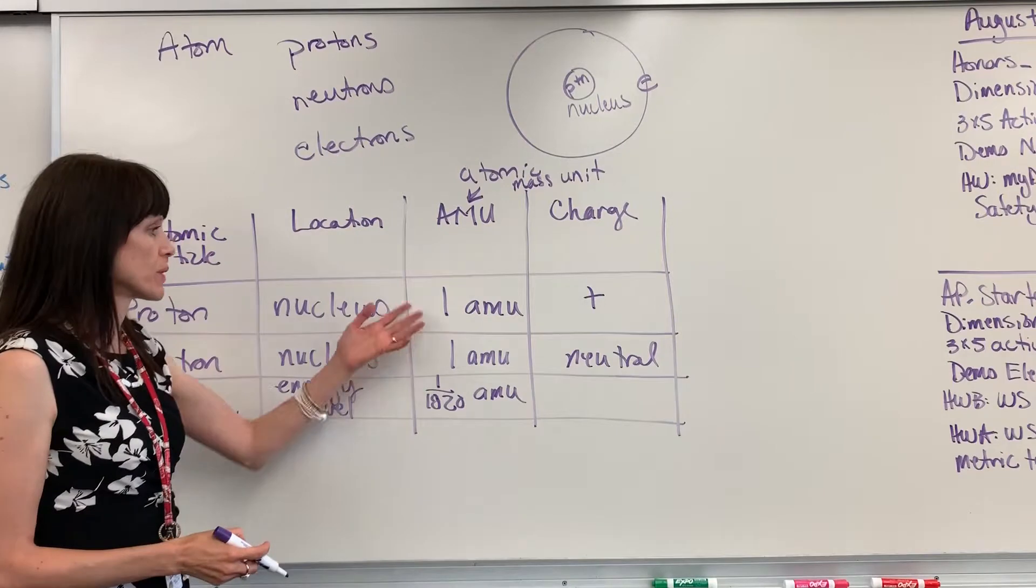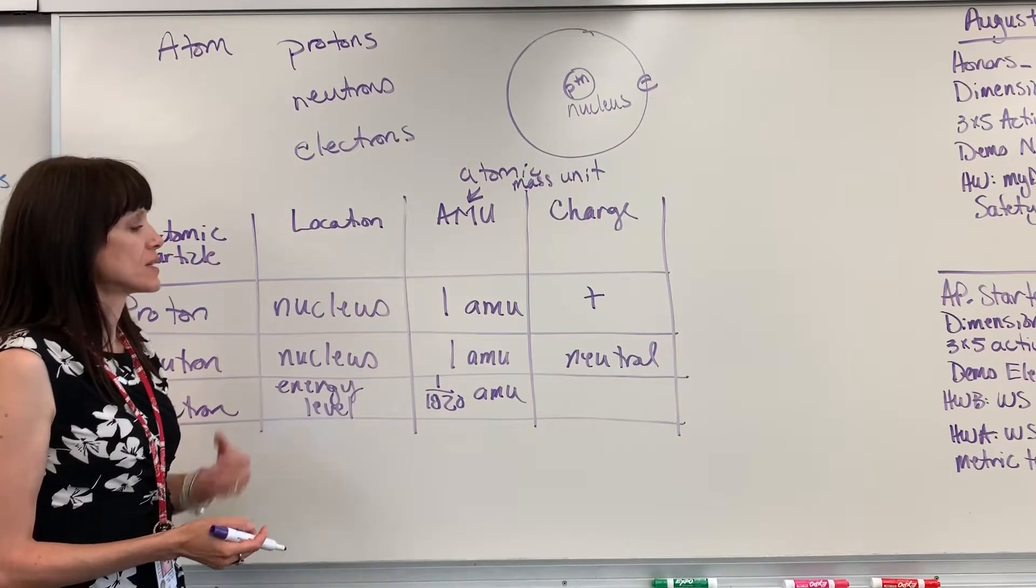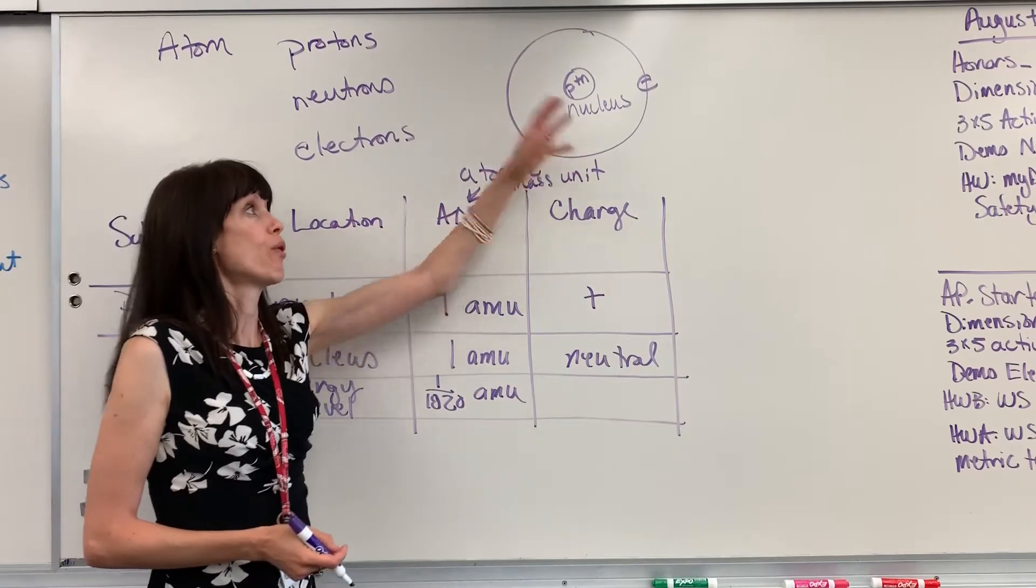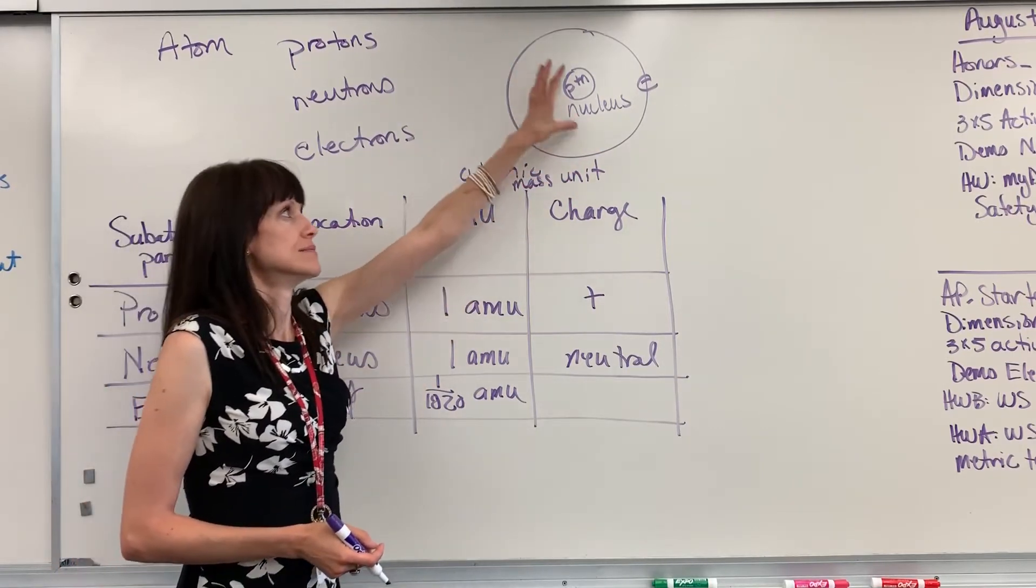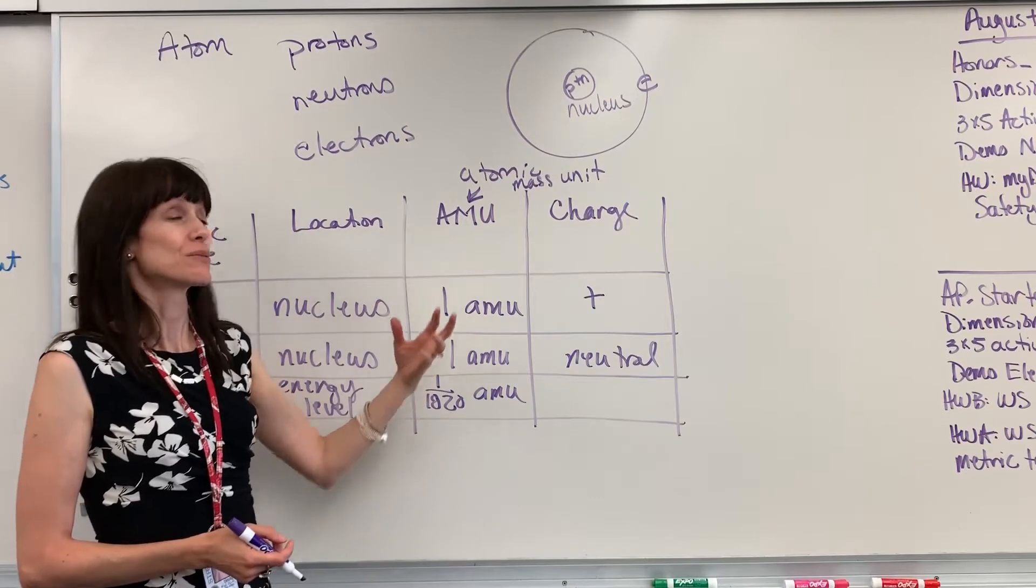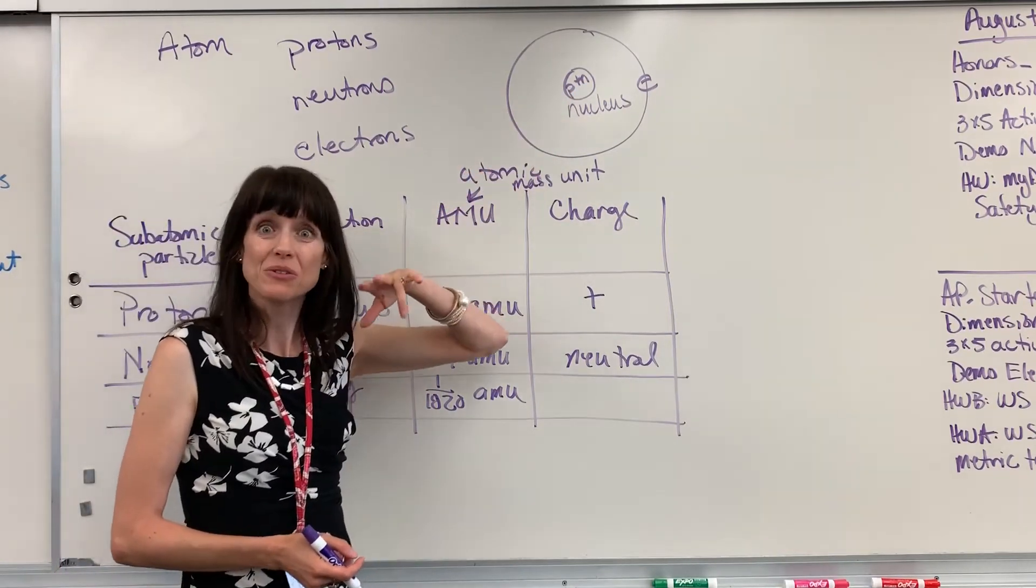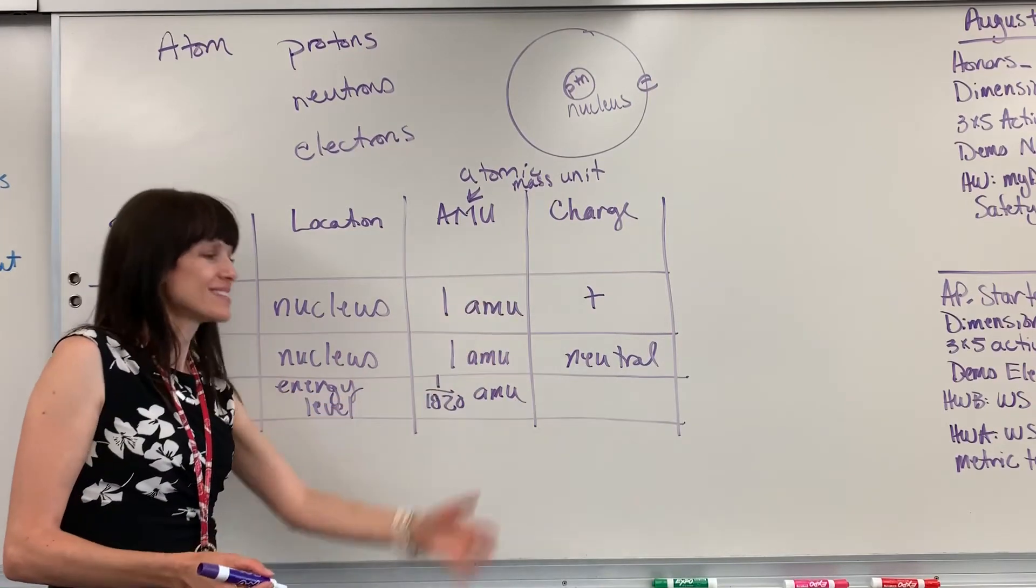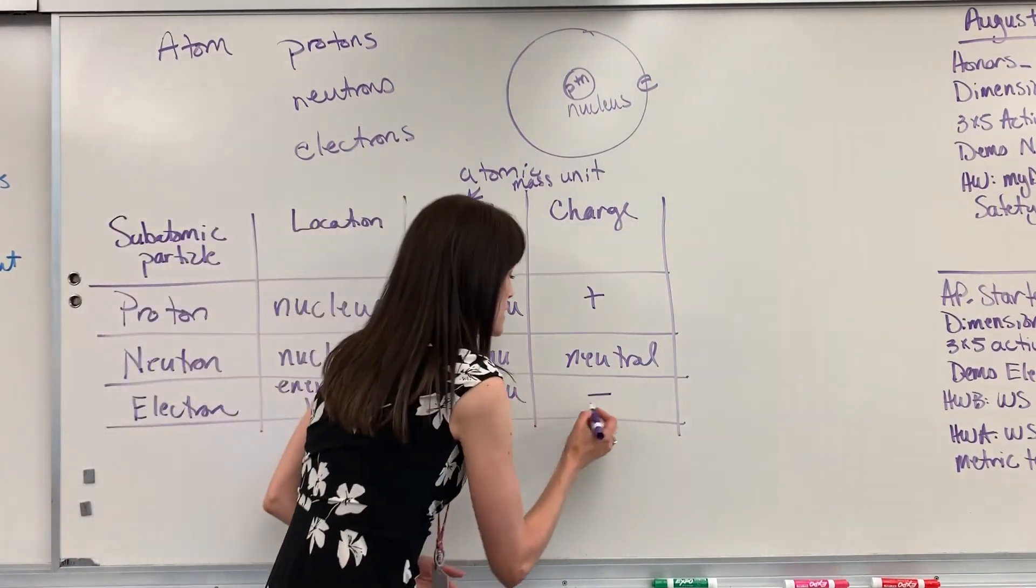Now because it's almost two thousand times smaller than the protons and the neutrons, it's almost as if its mass doesn't impact the overall mass of the atom. So when we talk about mass, we're really just talking about the protons and the neutrons because the electrons are so small. And of course, the electron has a negative charge.